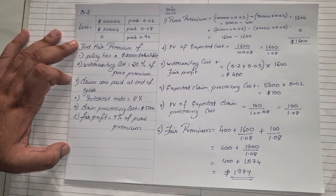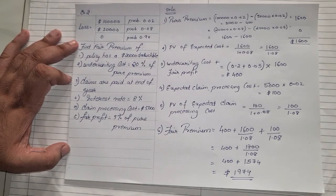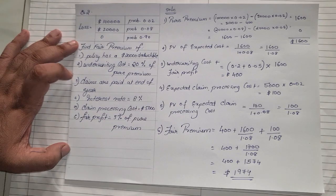These are the two variations: the first sum with full coverage and the second with a deductible value. Both sums should be thoroughly solved by everyone. In this way we have solved sums based on expected claim cost and fair premium. I hope everyone understood. With that we will end this video.